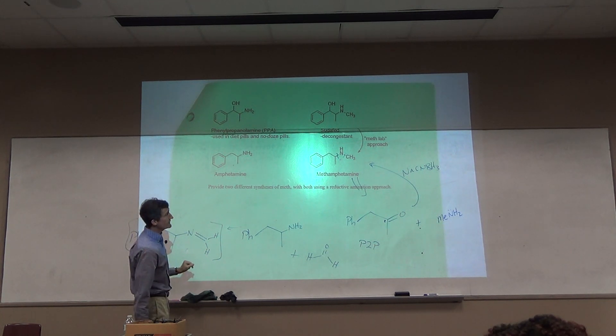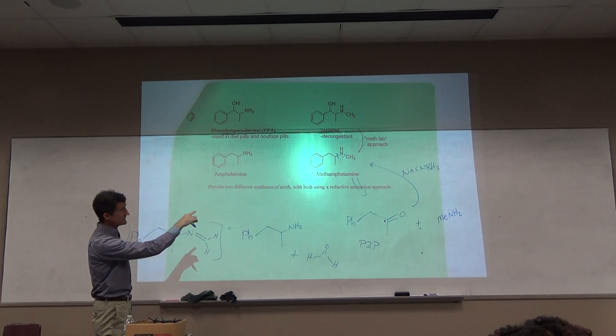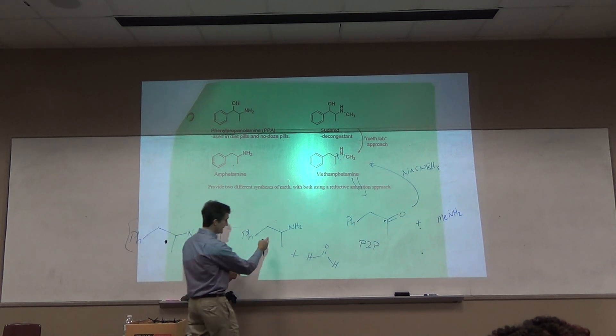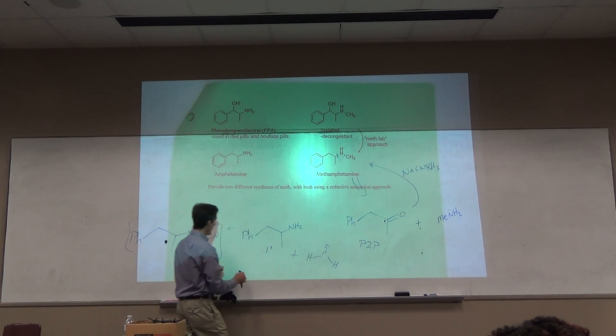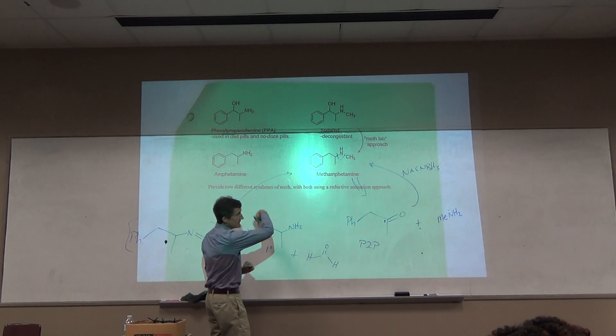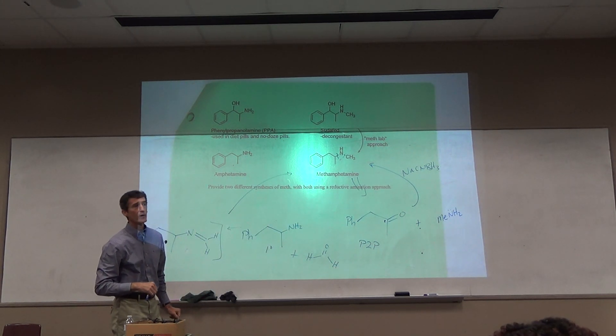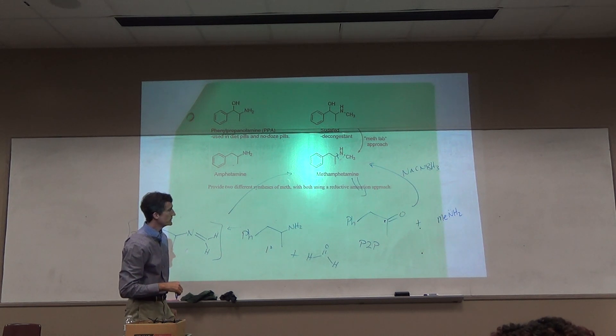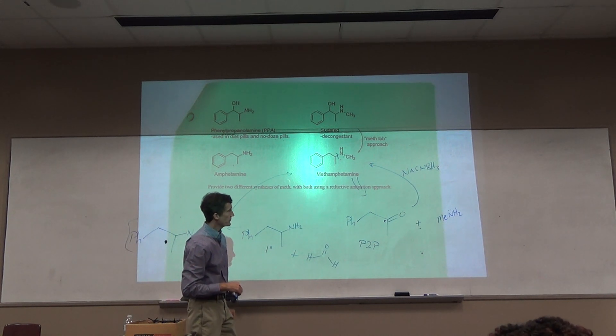So another route to make methamphetamine by a reductive amination approach is this primary amine and formaldehyde with something like sodium cyanoborohydride or analogous type reagent.